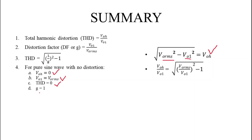For the distortion factor G in the case of a pure sine wave: G = V₀₁ / V₀RMS. Since for a pure sine wave V₀₁ = V₀RMS, substituting gives G = 1.